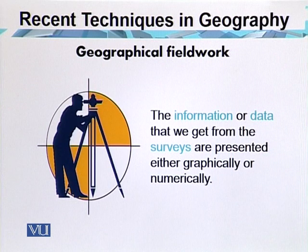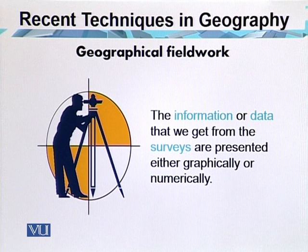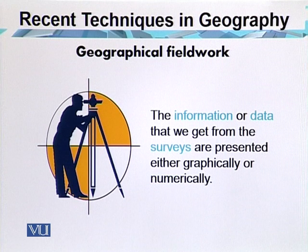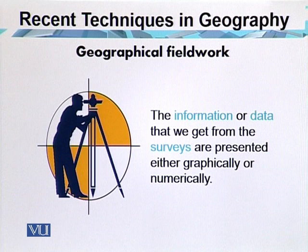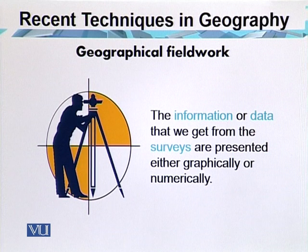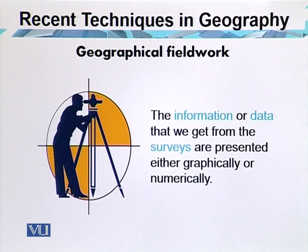The information or data that we get from surveys are presented either geographically or numerically. In a plan, detail is drawn to scale, while in a map, many features have to be represented by symbols because the scale is too small. Information can be added as contours, but only spot heights are shown on plans.